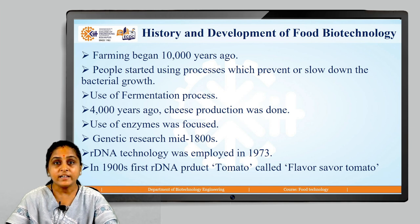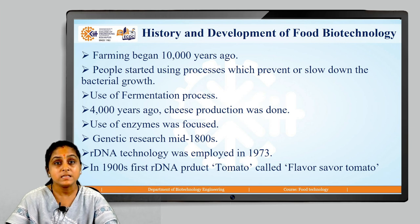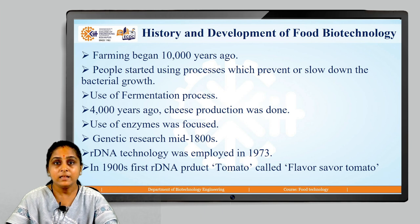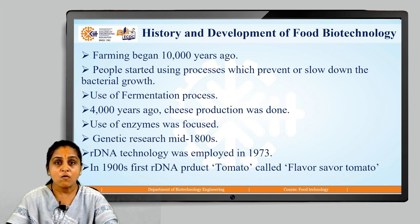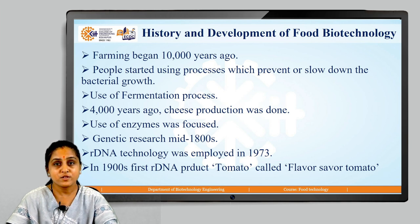Genetic research began with respect to food biotechnology in the mid-1800s, and recombinant DNA (rDNA) technology was eventually employed in the year 1973. In the 1990s, the first rDNA product, a flavored tomato, was brought into the market.